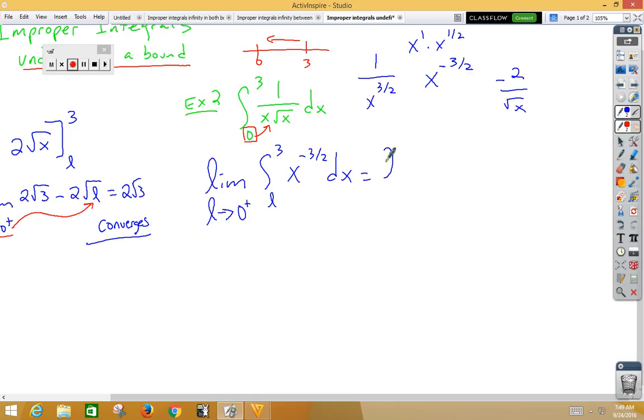So now we have the limit as L approaches 0 from the right side. We have negative 2 over root x from L to 3. Well, if we plug in, we get negative 2 over root 3 minus negative 2 over root, and we are plugging in a 0. Well, notice what happens when we plug in a 0.